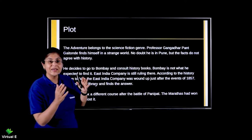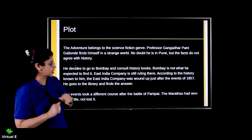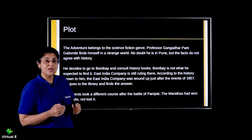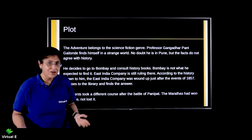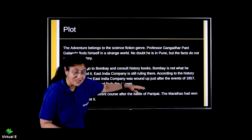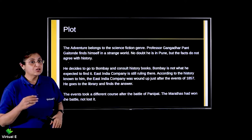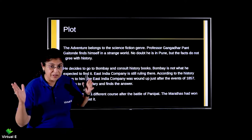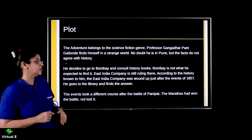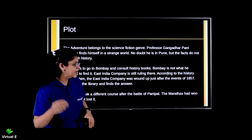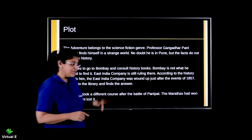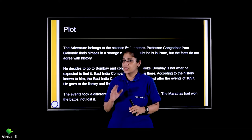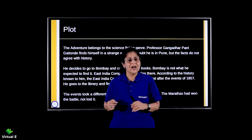Bombay is not what he expected. He goes there and realizes: this is not the Bombay I know. The East India Company is still ruling there. According to the history he knows, the East India Company was wound up just after the events of 1857. But here he can still see it operating — which is very strange. He goes to the library to find the answer and understand what is going on.